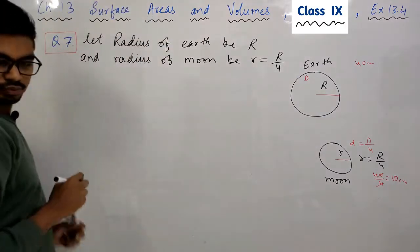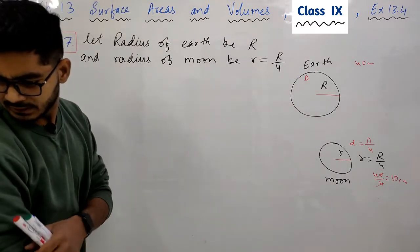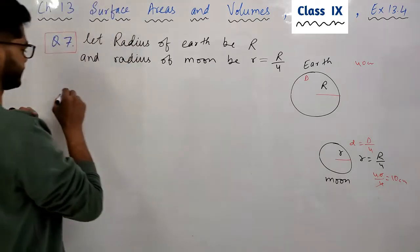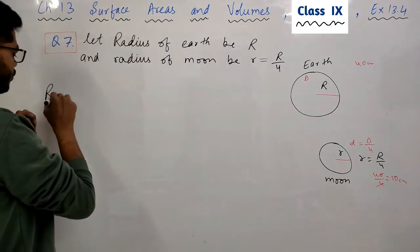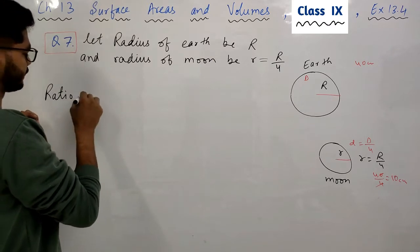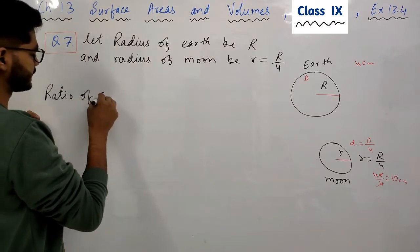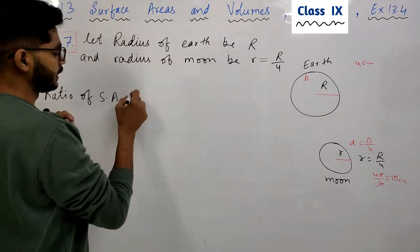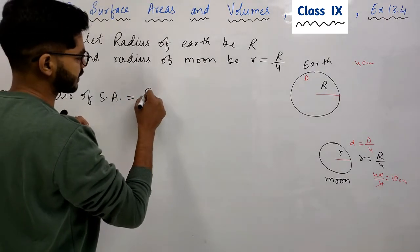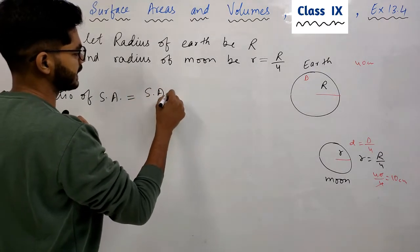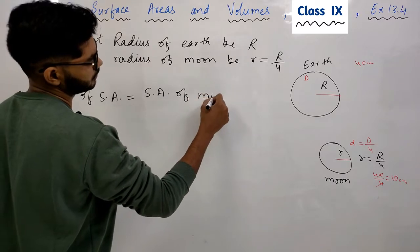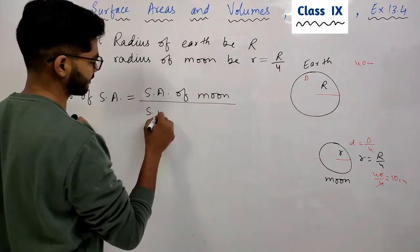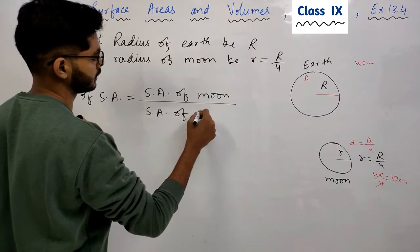अब उन्होंने हमसे पूछा है ratio of their surface areas। तो ratio of surface areas निकालते हैं। मैं ऊपर लिखूँगा surface area of moon, और नीचे लिखूँगा surface area of earth।